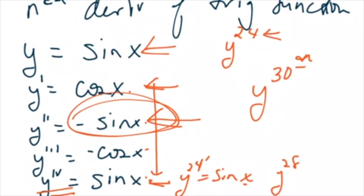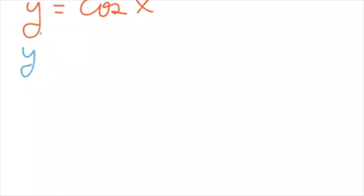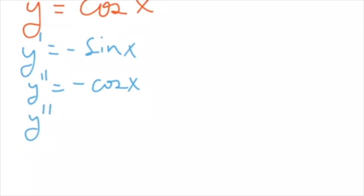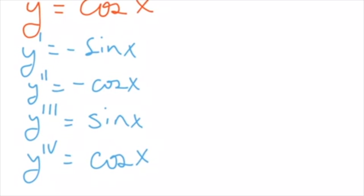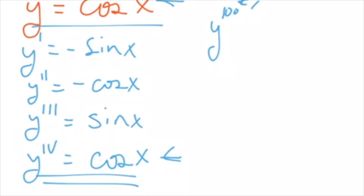Once you get the first four derivatives, you can figure out all the rest just by checking if the number is divisible by four. Now let's look at cosine: y prime is negative sine, y double prime is negative cosine, y triple prime is sine of x, and the fourth derivative of cosine gives me just plain cosine of x. So again, every fourth derivative I'm back to the original function. That means if I'm looking for the 100th derivative of cosine of x, since 100 is divisible by four, I'm right back to cosine of x.